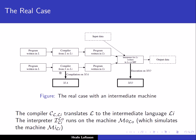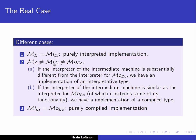The purely compiled implementation is where we do not have an intermediate language, but we just generate code for the host machine. We have a program written in L and a compiler, but instead of compiling to an intermediate language, we compile it directly to the host language. In between, there are other possibilities, and the real case is often a mixture of interpretation and compilation, as we saw for the Java example.